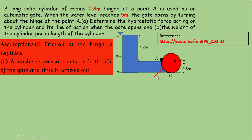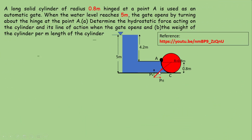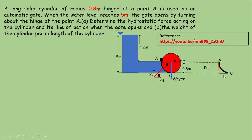It is convenient to calculate the horizontal and vertical components. The pressure force acts normal to the surface, making an angle theta with respect to horizontal, so we resolve it into a horizontal component and a vertical component. The weight of the cylinder acts downward through the center. To find these components, we project the curved surface AC vertically and horizontally. pH acts on the vertical projection and pV acts on the horizontal projection.